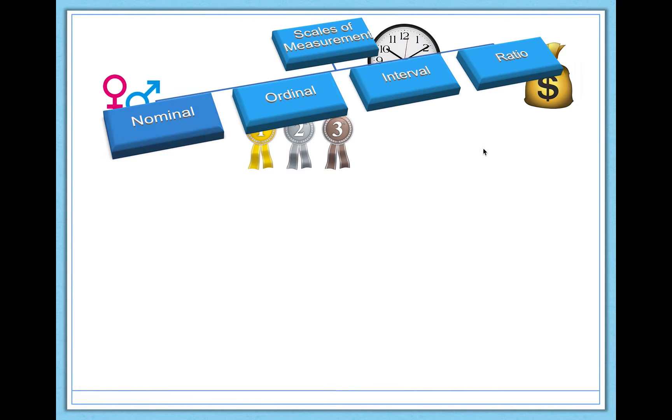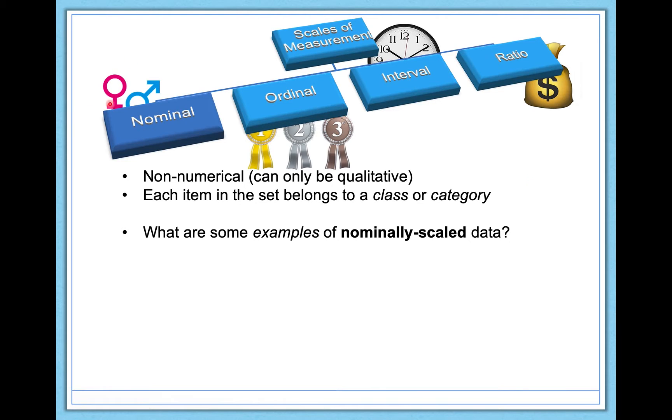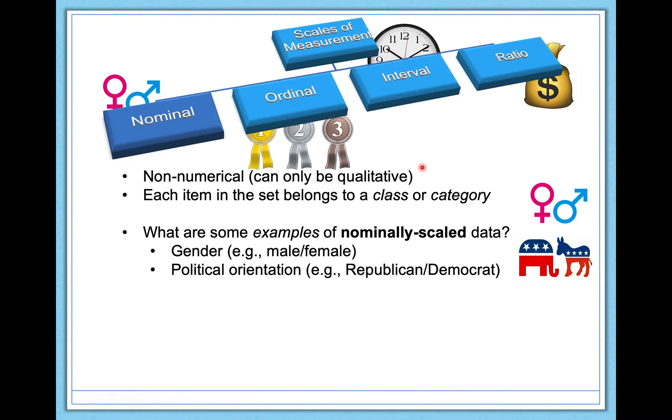Let's start with nominal scales of measurement. The key thing to know is that the data is non-numerical. It can only be qualitative. If you have numbers in your data set, you can automatically rule out nominal as the scale of measurement. Each item in your data set needs to belong to a class or a category. Here are some examples: gender, political orientation, and race.